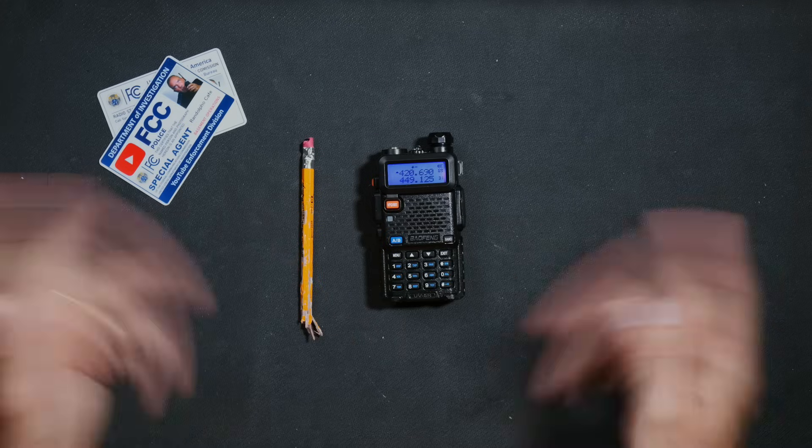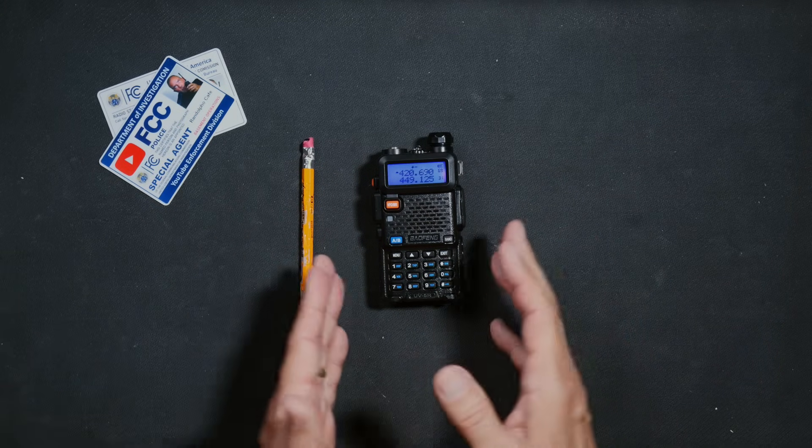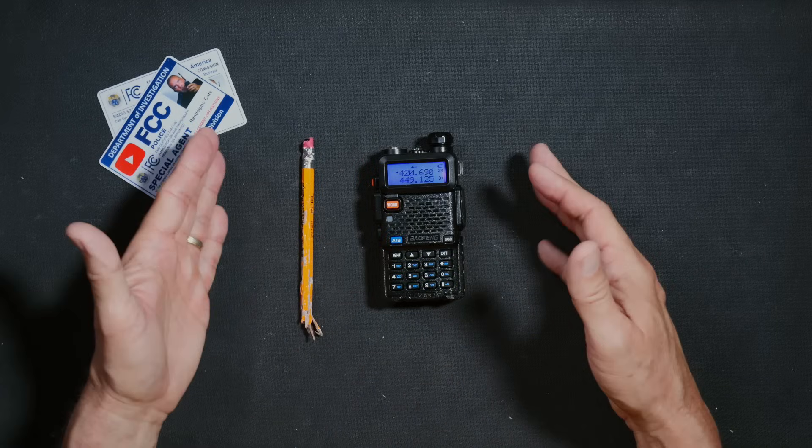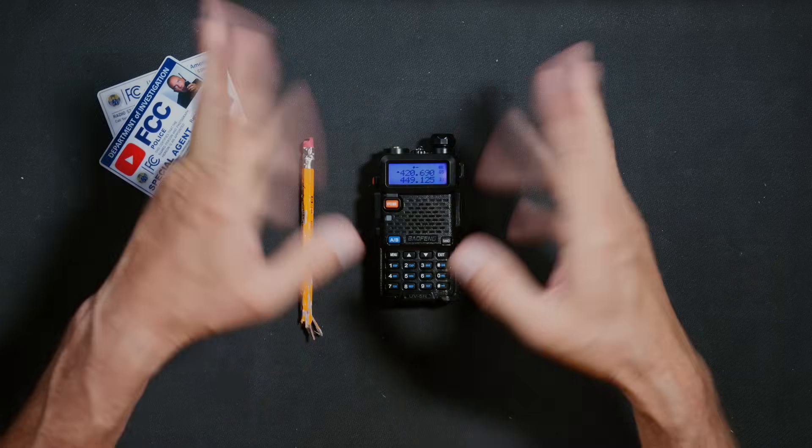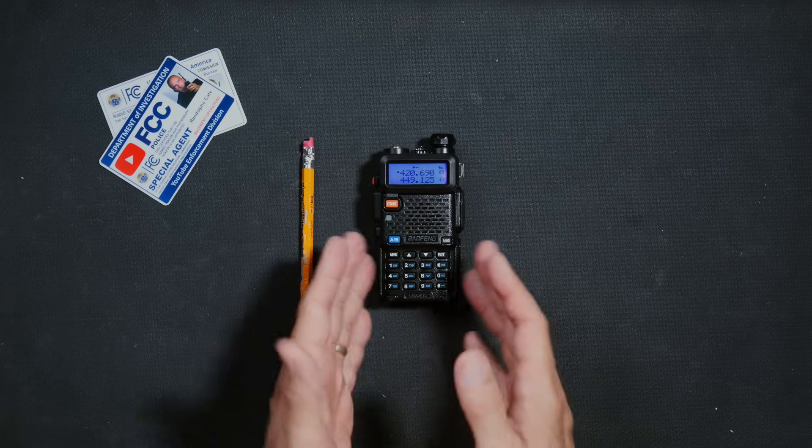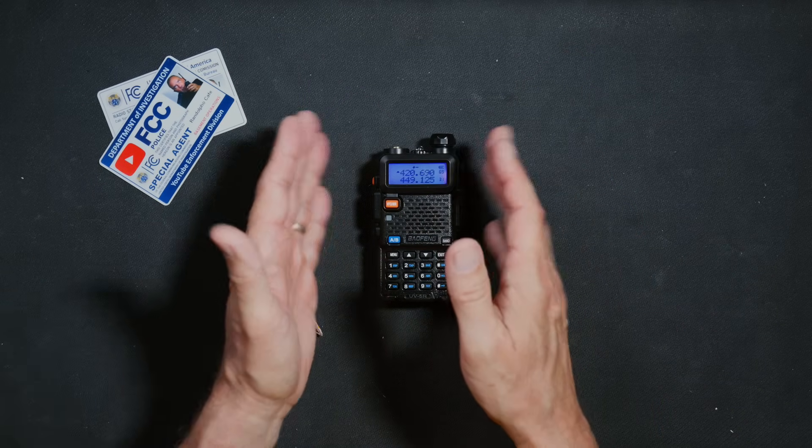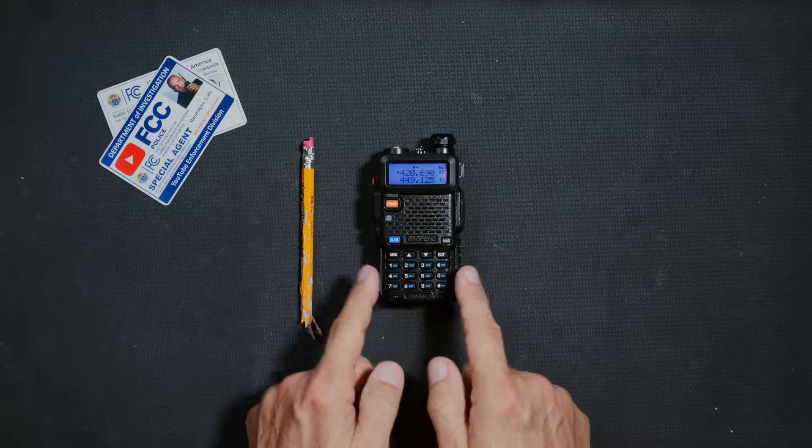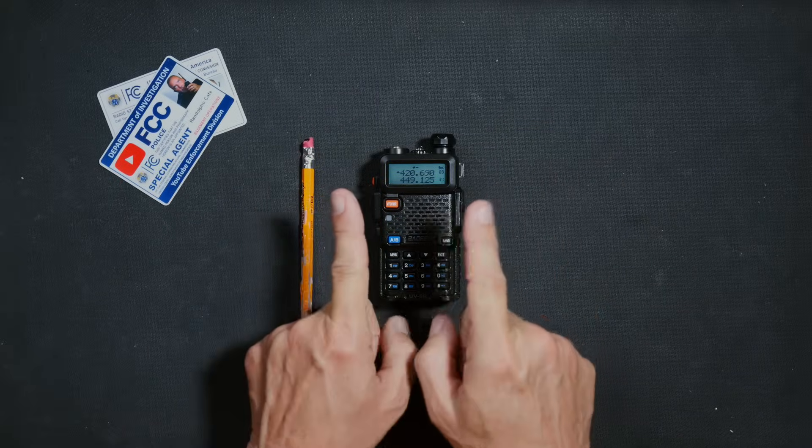Confirm. That channel is now cleared and you can store a new frequency in it by following the previously mentioned steps. Congratulations, because if you paid attention, you now know how to add and delete channels on your Boofwang UV5R or similar radio.